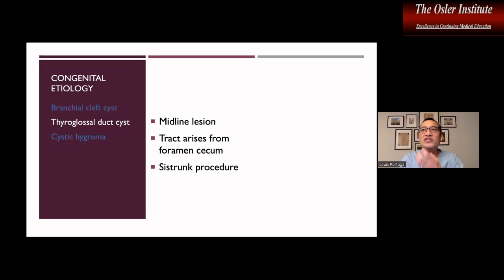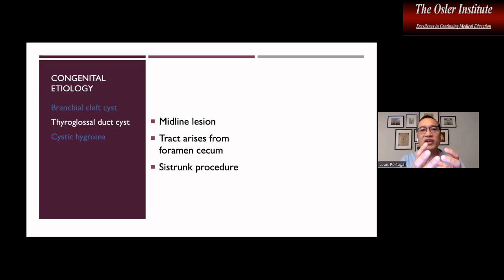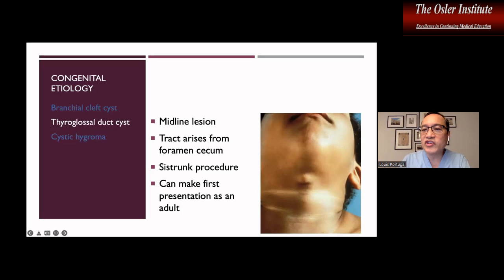What defines the Sistrunk procedure? Like with a branchial cleft cyst, you must not focus just on removal of the cyst — otherwise recurrence will occur. You must include the tract. For the thyroglossal duct cyst, that means removing not only the cyst but also the central portion of the hyoid bone — the body of the hyoid — just above the laryngeal complex. Removal of the thyroglossal duct cyst alone without the body of the hyoid results in a higher recurrence rate. One key physical finding: when the tongue is protruded, the cyst will rise.